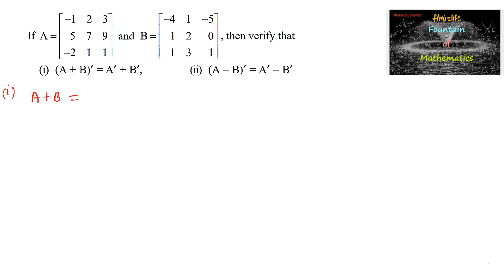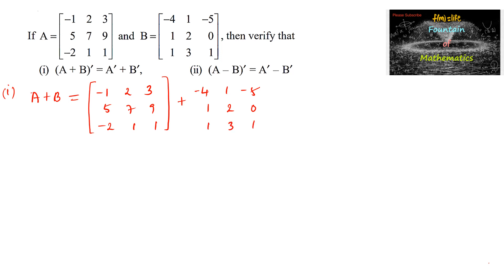Let us find the sum A+B. Adding the corresponding elements: −1+(−4)=−5, 2+1=3, 3+(−5)=−2; 5+1=6, 7+2=9, 9+0=9; −2+1=−1, 1+3=4, 1+1=2. So this is the A+B matrix.